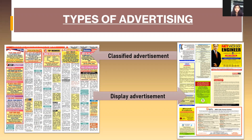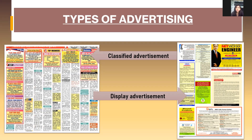Some of the categories for classified ads include public appointments, situations vacant, situations wanted, matrimonial, education, rental, and business properties. The second type is display ads, which are usually between one-eighth and a full page. They are highly visual, which helps draw the reader's attention to the message.